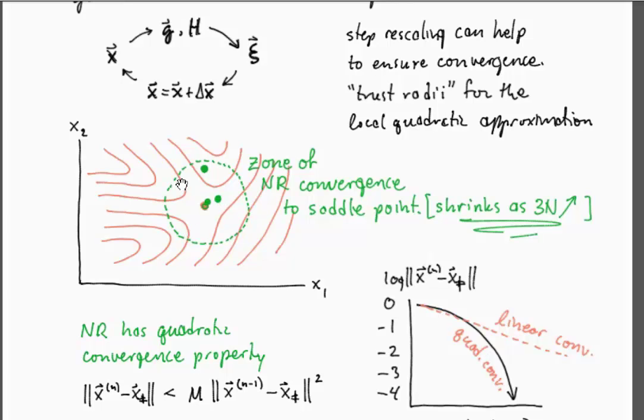If there are many many other degrees of freedom other than your reaction coordinate, then you have to get close enough to the actual transition state that all of those other degrees of freedom have positive force constants. That's a very very small space to hit as the number of modes gets higher and higher.